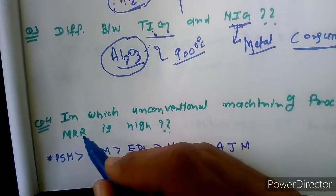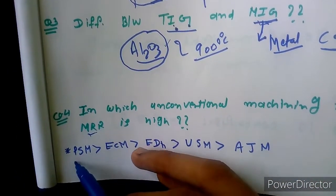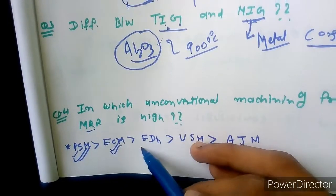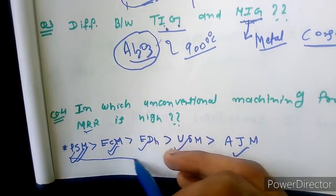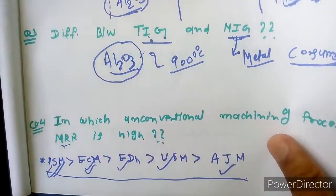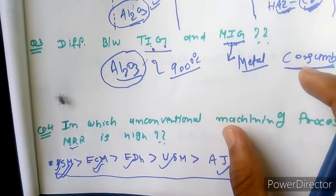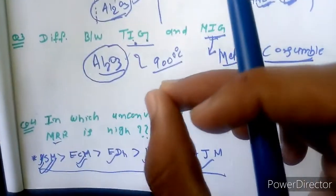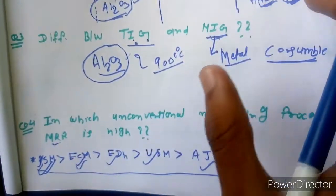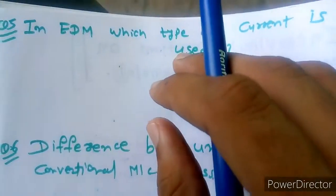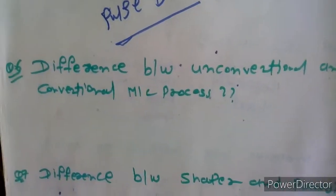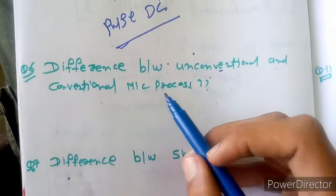The next question is: which unconventional machining process has the highest material removal rate (MRR)? The order of MRR from highest to lowest is: plasma machining, electrochemical machining (ECM), EDM, USM. The MRR in plasma is highest because the temperature is very high, and in a fraction of a second the material melts. In EDM, we use pulse DC current.